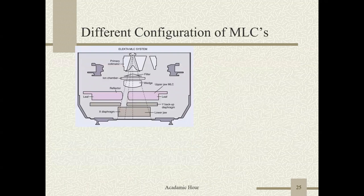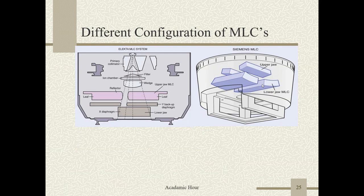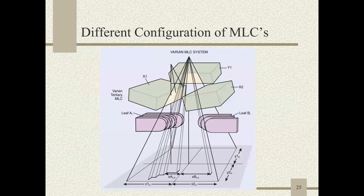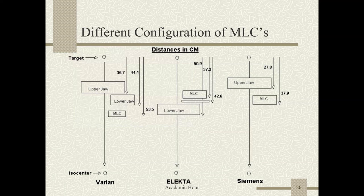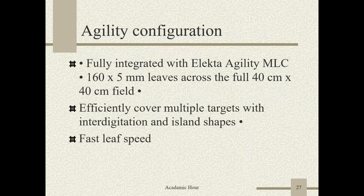This shows the configuration of the Elekta system. You can see the leaf, the upper jaw replacement, the lower jaw, and the wired backup diaphragm. The upper jaw is present and the lower jaws are the MLCs. These are double-end focused leaves following the divergence of the beam. A TG-50 picture shows the distance from the source to the isocenter for context.